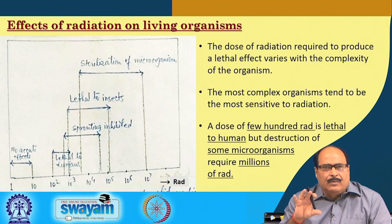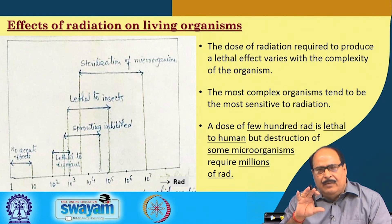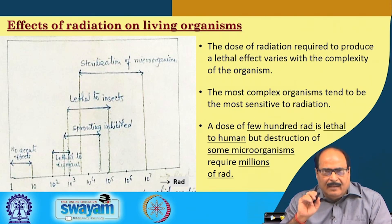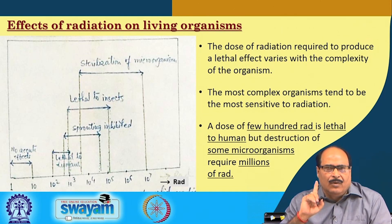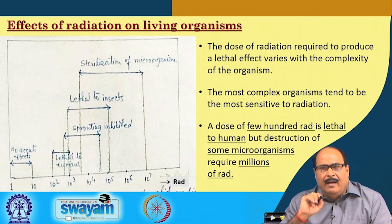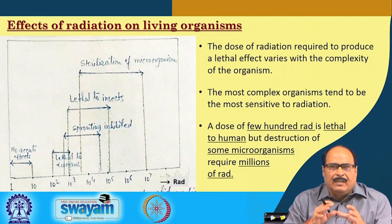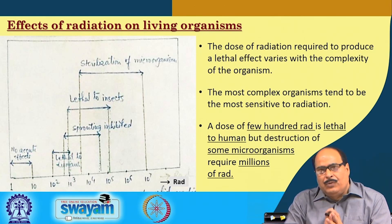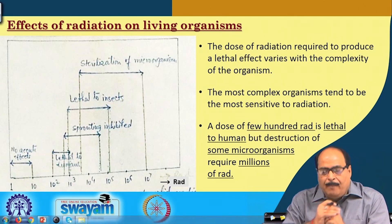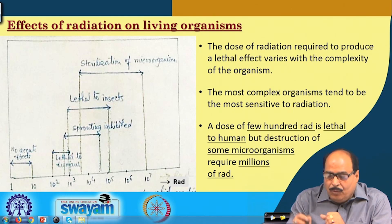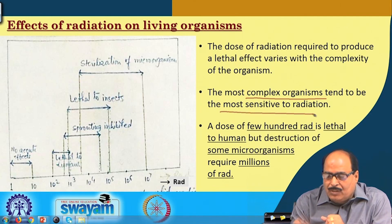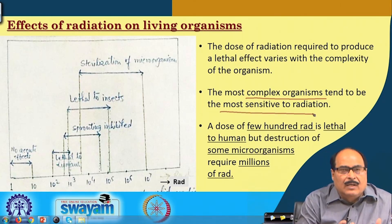In this slide I have tried to show you the effect of radiation on living organisms. The lethal and potentially lethal effects of radiations were realized soon after the discovery of x-rays by Roentgen and radioactivity by Becquerel in the late 19th century. It was established that the dose of radiation required to produce a lethal effect varies with the complexity of the organism. The most complex organisms tend to be most sensitive to radiation, as shown in this line diagram.